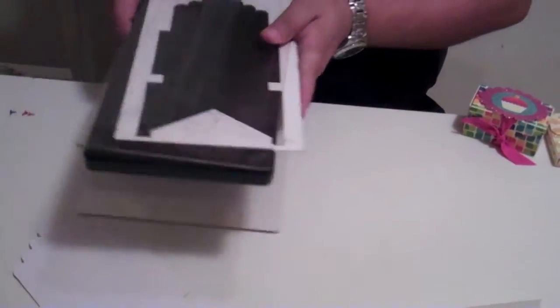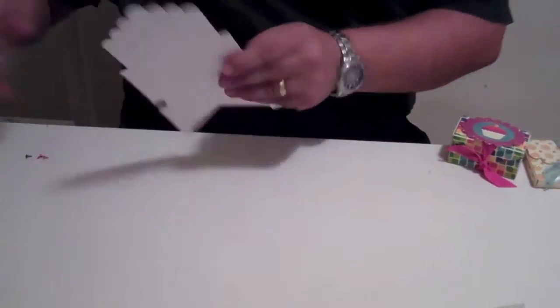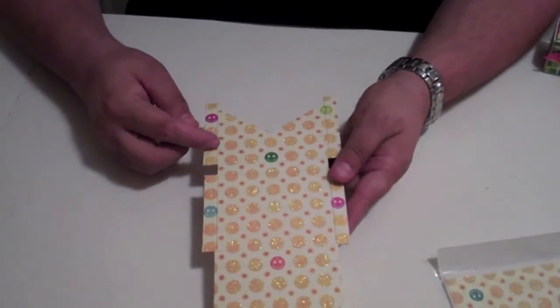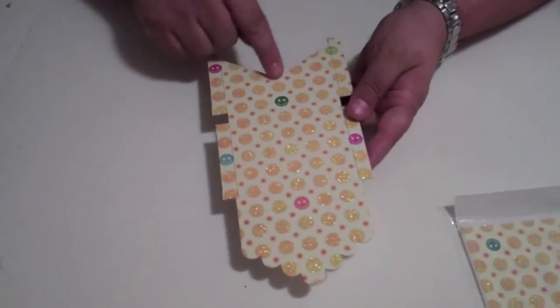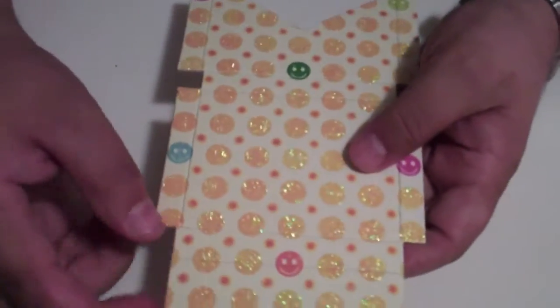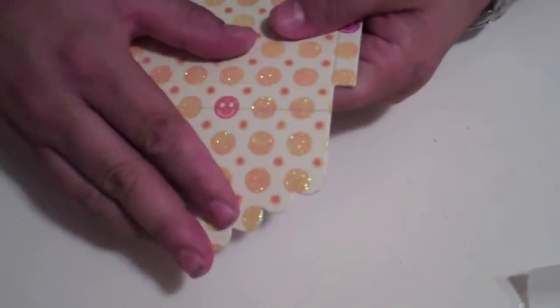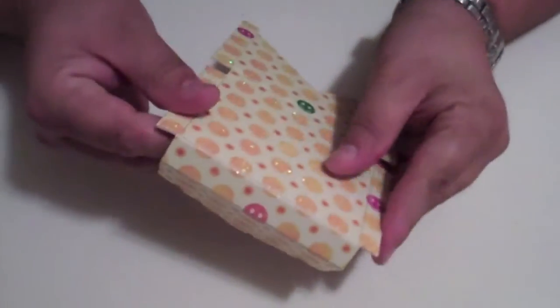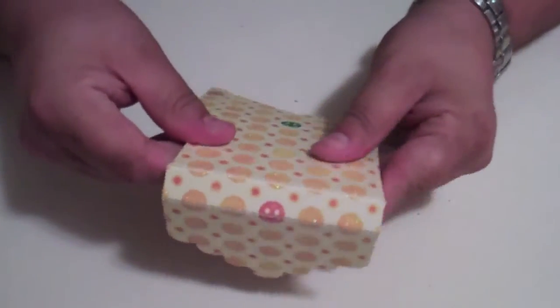And then basically, with this, this is what our image is. Now you can see where the scores are as well as the cutting, okay? So then what we want to do, this is all we're going to do, is we're just going to fold it. See how nice and crisp that folds? We're going to fold it on the score marks.